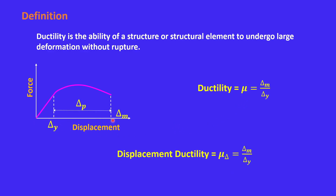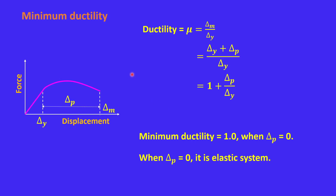Since we have used displacement as the parameter, this ductility delta-m by delta-y is called displacement ductility, given by mu-delta. The minimum ductility can be understood from the expression: mu equals delta-m by delta-y equals 1 plus delta-p divided by delta-y. Minimum ductility occurs when delta-p is zero, giving mu equal to 1. Physically, delta-p equal to zero means there is no plasticity — the system is elastic. So the minimum value of ductility is 1, indicating a purely elastic system.